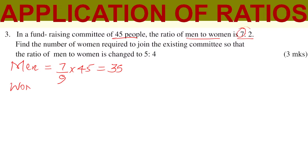For the women, we get this from the ratio. The ratio of women is 2, so that will be 2 divided by 9, multiplied by the total, which is 45, and this gives 10. You can see when you add 35 plus 10, that gives you 45.